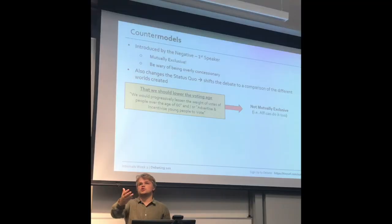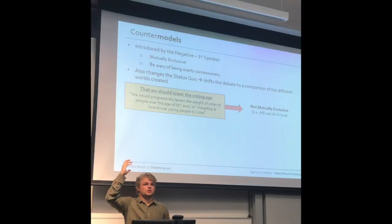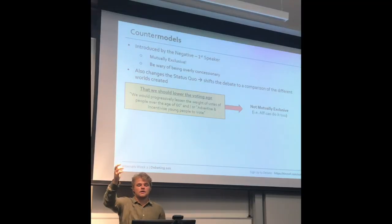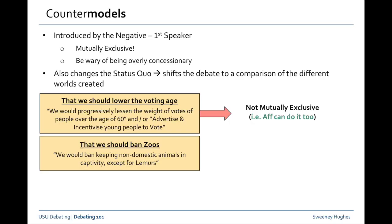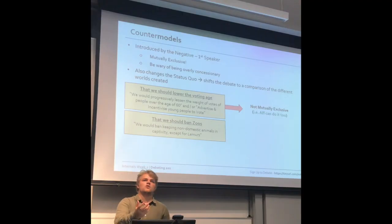If your counter model is something the affirmative can just take too, you've effectively wasted your first negative speech if it's built on that foundation and it becomes quite hard to defend. Another example: if you get a topic that we should ban zoos, you say we ban keeping domestic animals in captivity except for certain animals. Why is that not a good counter model?